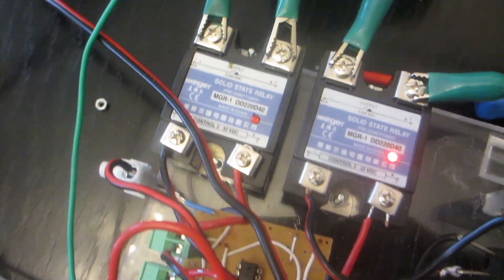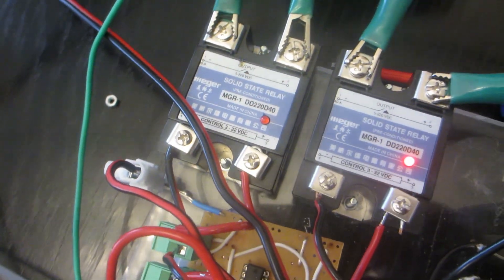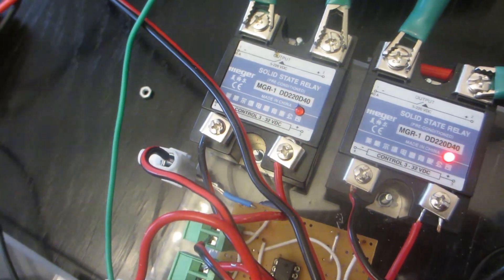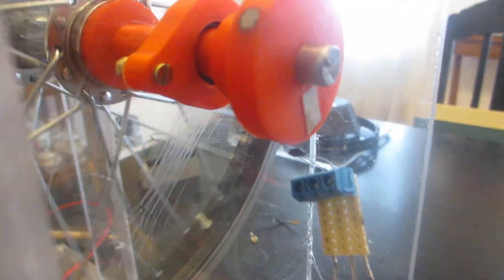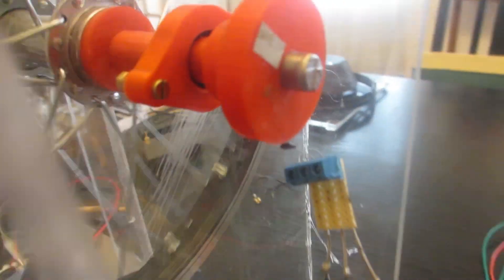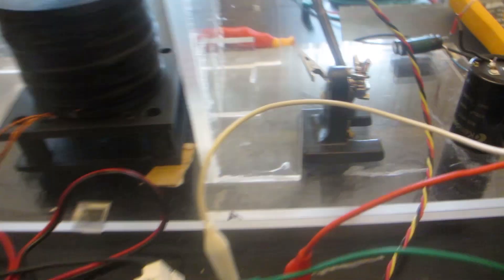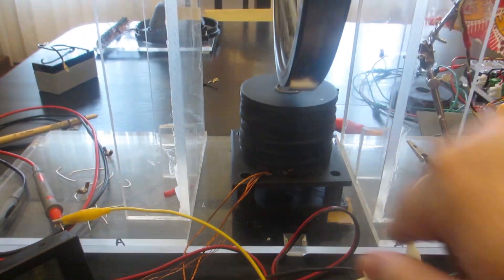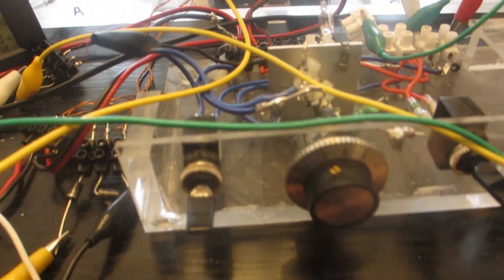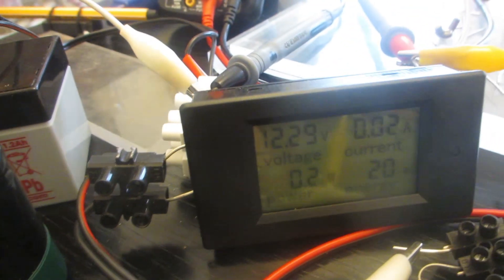That's the Bedini circuit and that's my SSRs. The right one is the current. Here we have a hall sensor, a little magnet, and when the magnet passes it disconnects the run battery and pulses into the run battery.